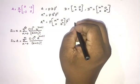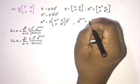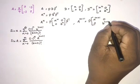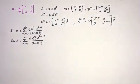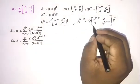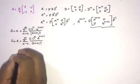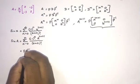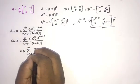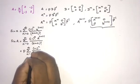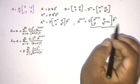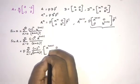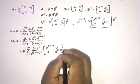We have A^(2n+1) which equals P [[a^(2n+1), 0], [0, b^(2n+1)]] P⁻¹. We can plug this in, so sin(A) equals P times the sum from n=0 to infinity of (-1)^n over (2n+1)! times [[a^(2n+1), 0], [0, b^(2n+1)]] times P⁻¹.